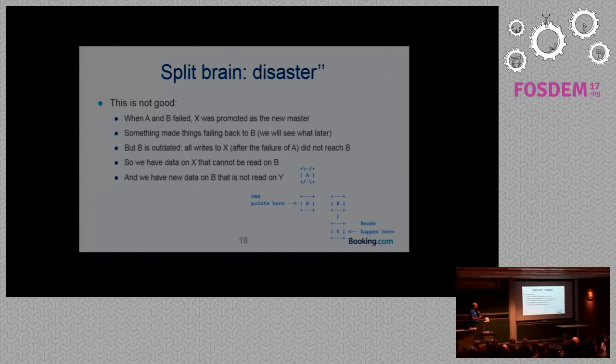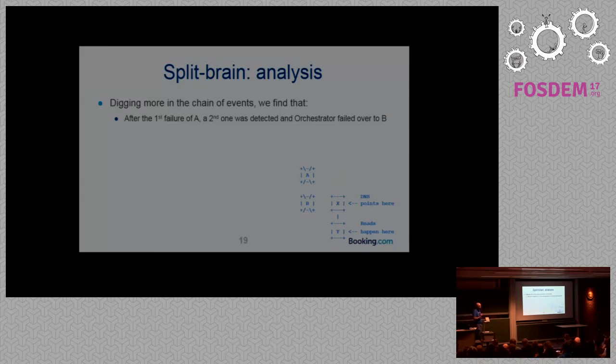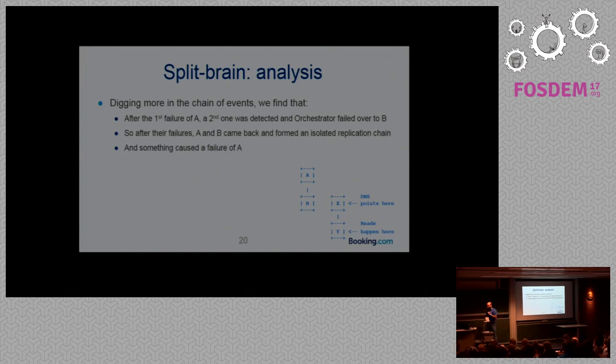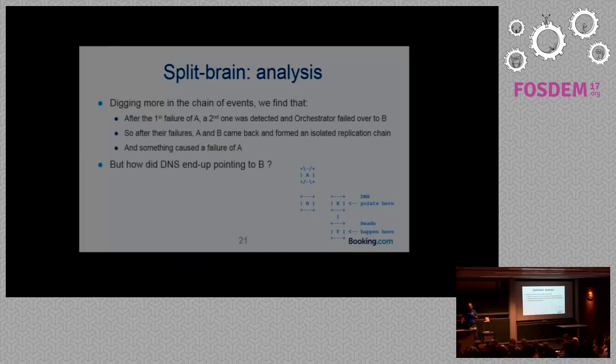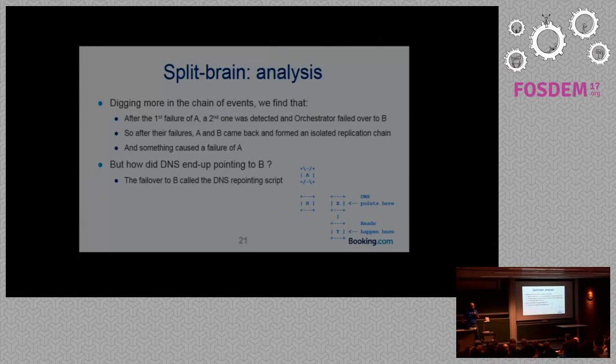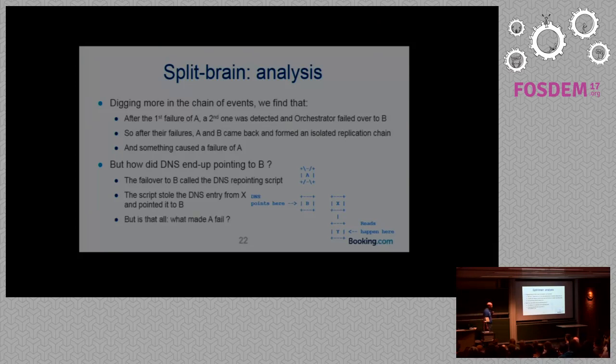It's really bad. It's not a split brain as itself. There were not two active masters at the same time. But there was half data on the left and half data on the right. So I will explain how we fix that later. But now let's see about what actually happened. After the failure of both A and B, a second failure was detected by orchestrator. I know that because I have the logs of orchestrator. After everything was fixed during the night, A and B were back up.